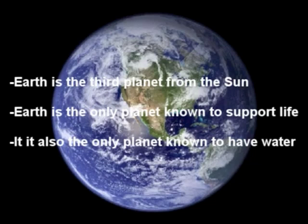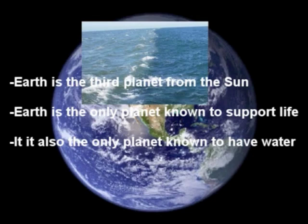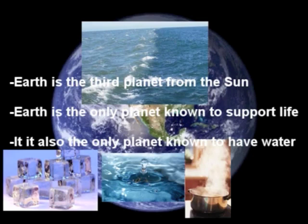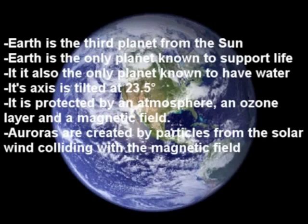Earth is the third planet from the sun and is the only known planet that supports life and has water in all three states, covering 70% of the planet's surface. It has distinct seasons due to its 23.5 degree tilt. It is protected by an atmosphere, an ozone layer, and a magnetic field. The particles from the solar wind, colliding with the magnetic field, create the auroras.